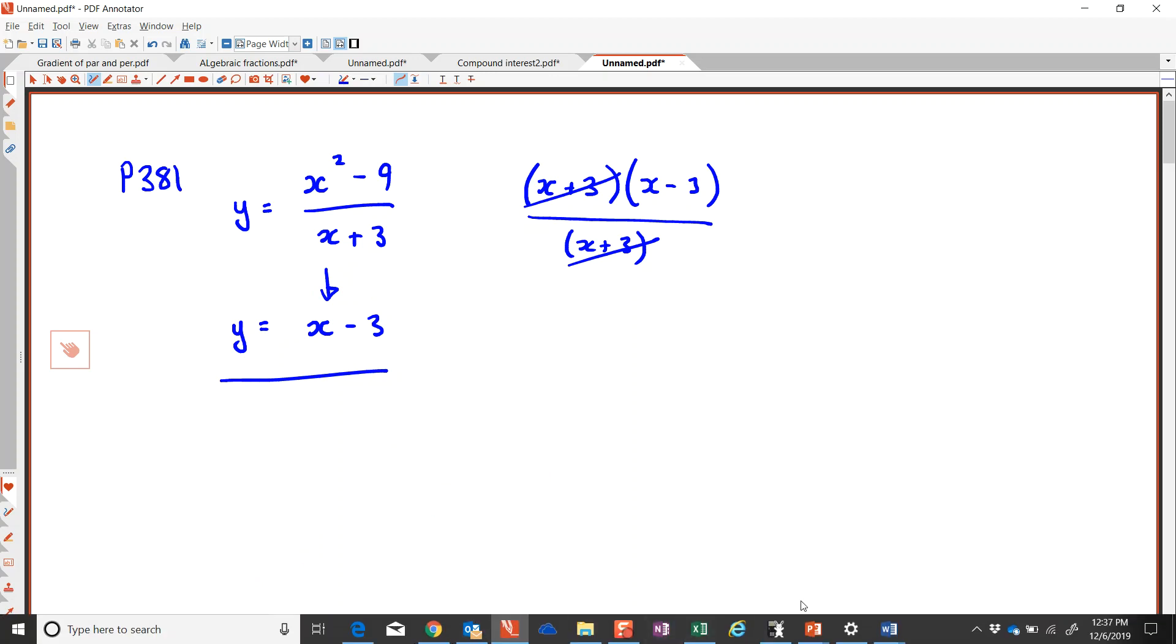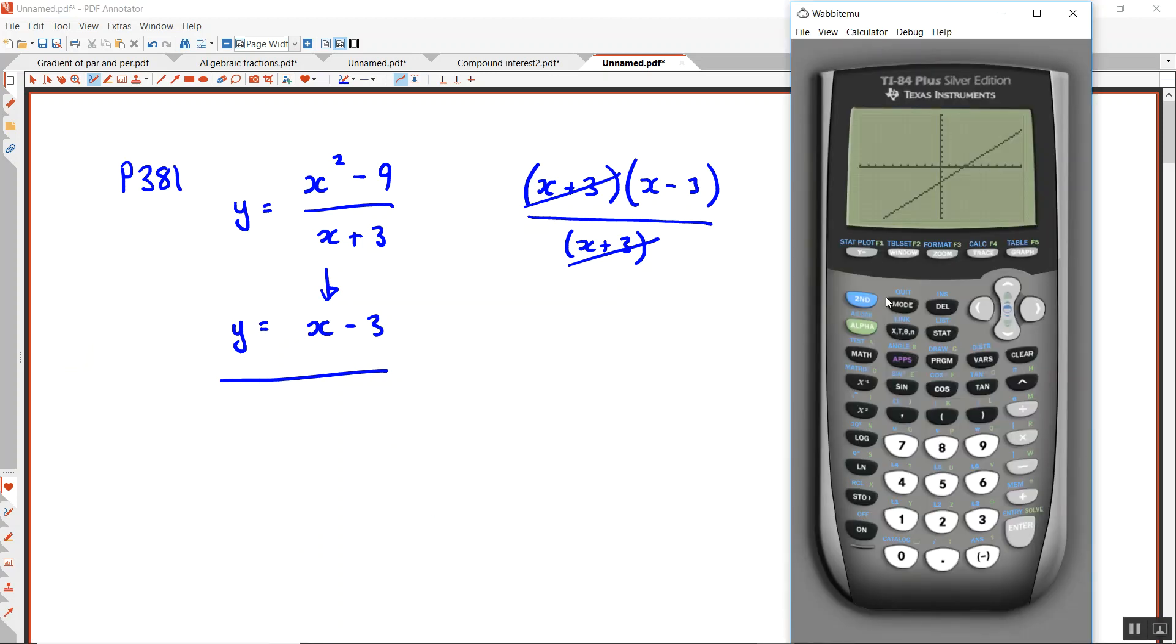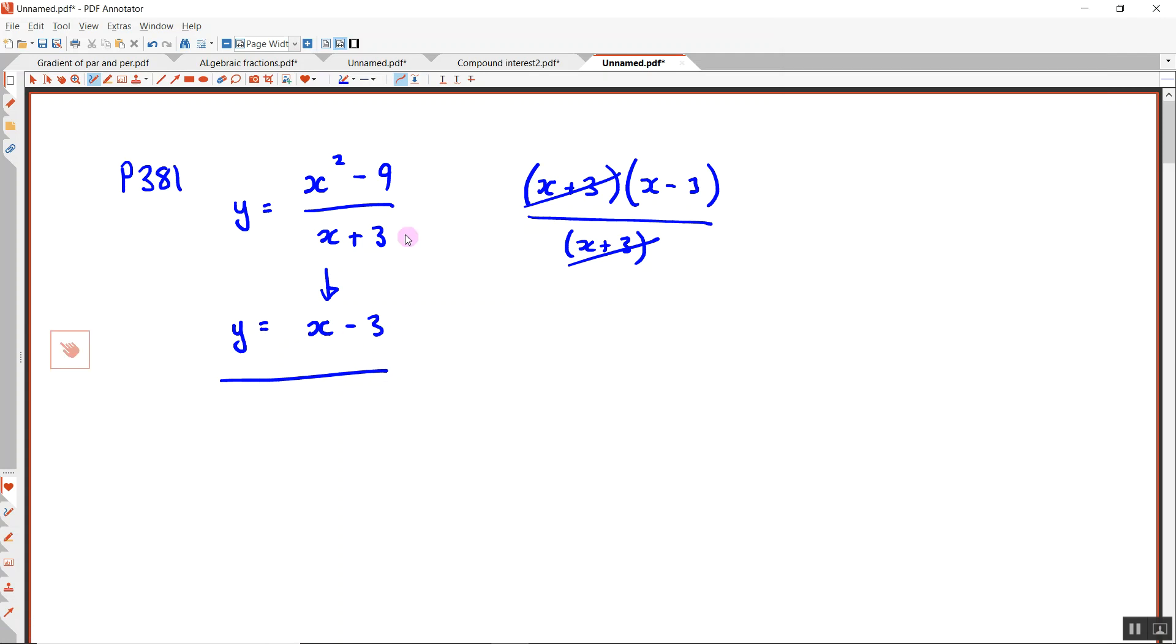So that's what they're asking you to look at. If we look at the computer, let's consider that this is the simplification. Now, we've already decided that there are some restrictions to this. What are the restrictions? So x cannot be positive 3. Negative 3. Why can't x be negative 3?